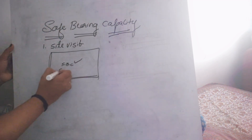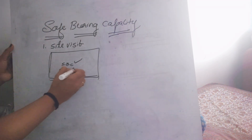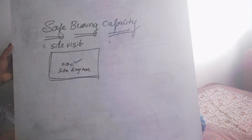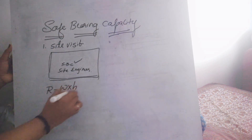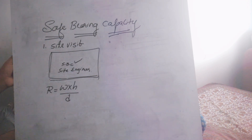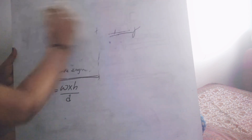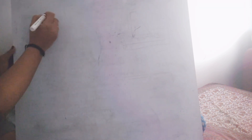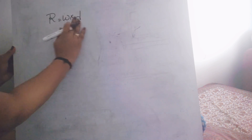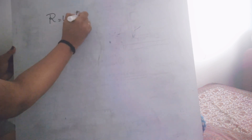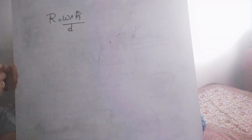Here I'll tell you the formula: Resistance R is equal to W into H divided by small d. Let me write it once again — R = W × H / d.